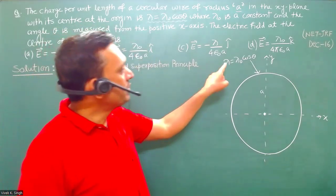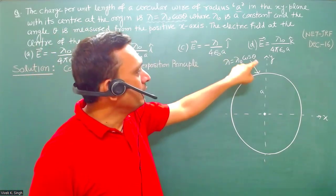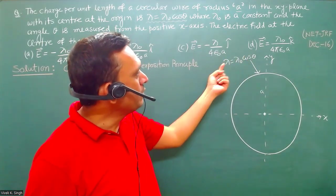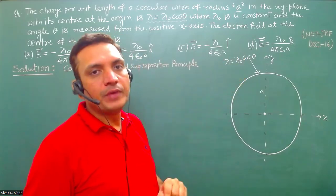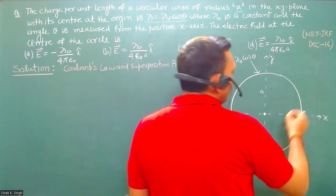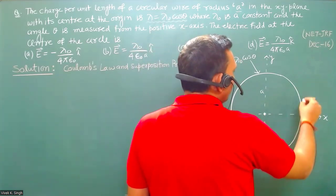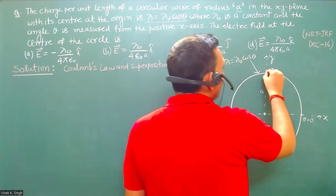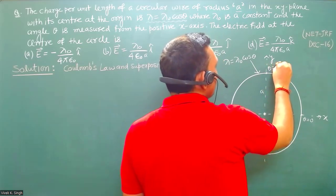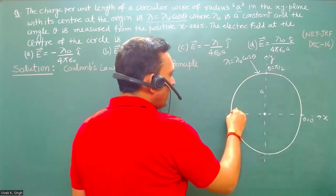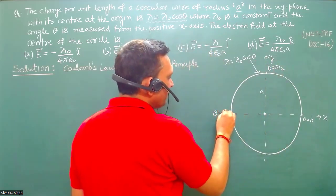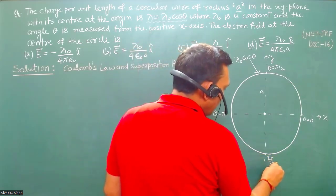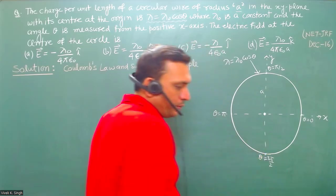This charge per unit length is varying because cos theta will have different values for different angles, so lambda will also vary. If we look at the variation of theta: from 0 to pi/2, from pi/2 to pi, then pi to 3pi/2, and 3pi/2 back to 2pi.